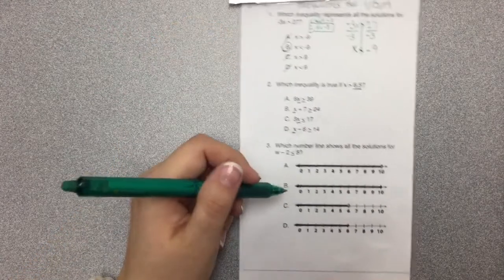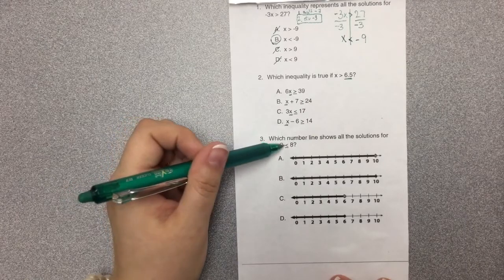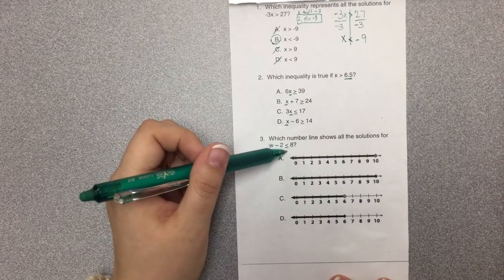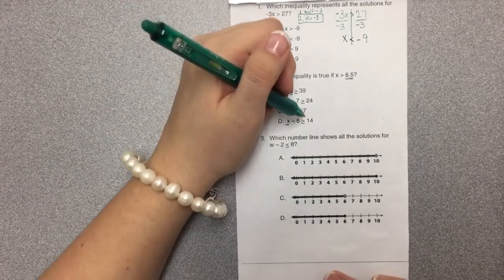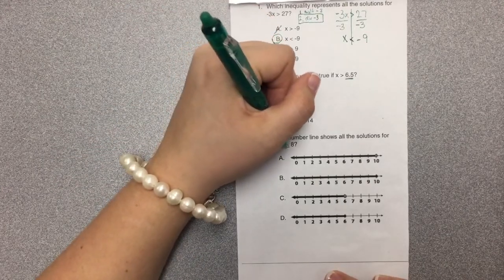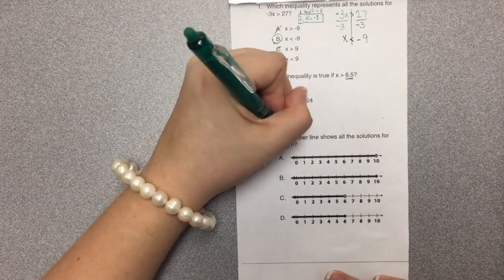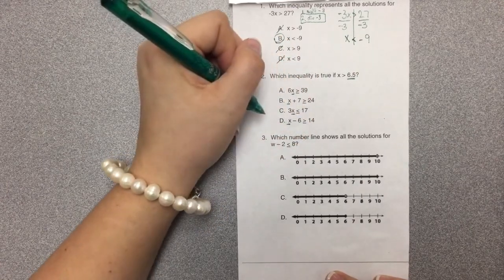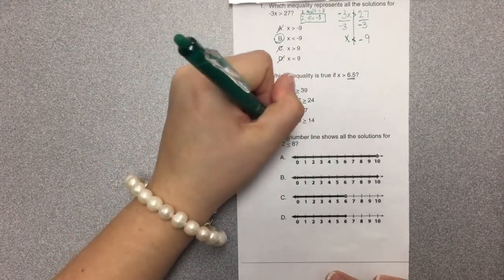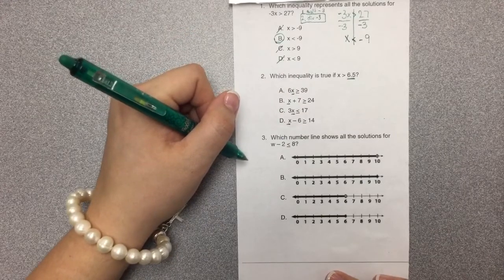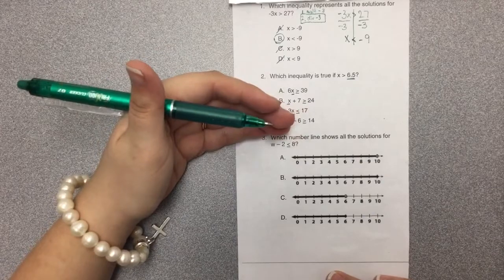All right. Which number line shows all the solutions for w - 2 ≤ 8? So we have w - 2 ≤ 8. First thing to think about: less than or equal to. Do you see the line beneath our inequality sign? When we think equal to, we need to remember what our dot looks like.